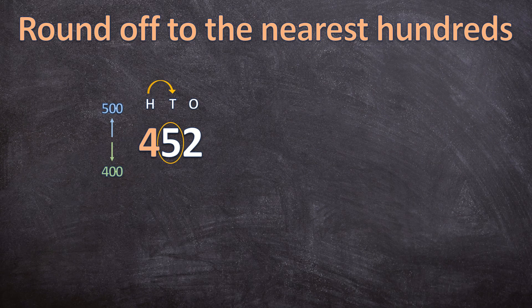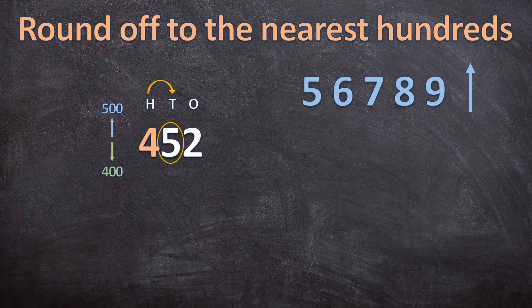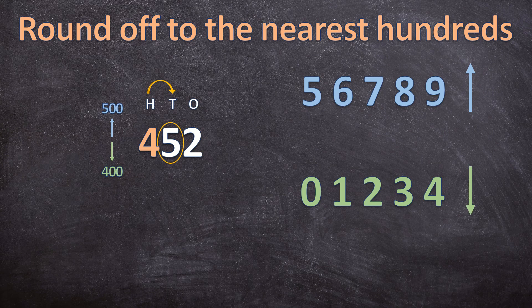Let's recap the rule: if we have 5, 6, 7, 8, or 9 in the tens place value, the hundreds digit rounds up. But if we have 0, 1, 2, 3, or 4 in the tens place value, the hundreds digit rounds down to 400. Since we have a 5 in the tens place, the hundreds rounds up. Also remember — when rounding off we don't use a regular equal sign; because it's an estimate we use a curvy equal sign. So 452 rounded to the nearest hundreds is 500.